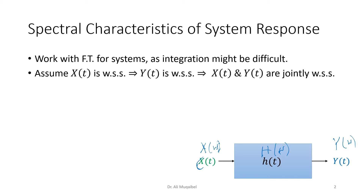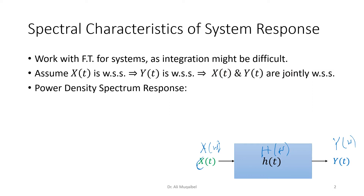So we're saying: if the input is wide-sense stationary and the system is linear time-invariant, the output is also going to be wide-sense stationary, and X and Y jointly are going to be jointly wide-sense stationary. Now, in time we represent random processes using autocorrelation; however, in frequency we use the power spectral density. So how are they related?